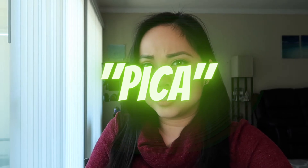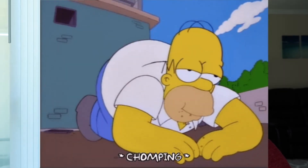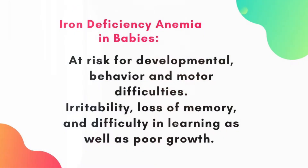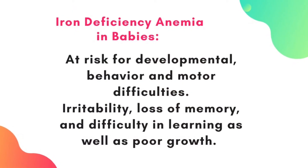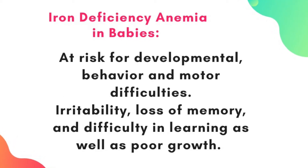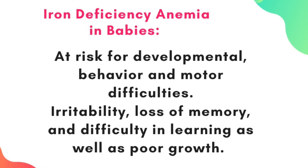There are also strange things that happen to some patients: they have pica, which is the persistent eating of non-food substances — like clay or dirt, called geophagia, or ice, called pagophagia. For infants, this is more serious because their bodies are developing and they need hemoglobin and iron. If they have iron deficiency anemia, they're at risk for developmental behavior problems, motor difficulties, irritability, loss of memory, difficulties in learning, and poor growth — because you need more blood to grow.